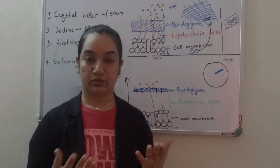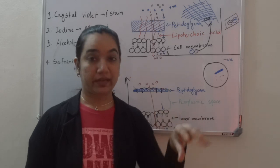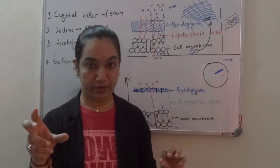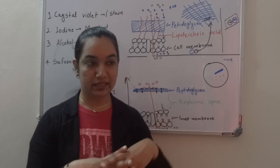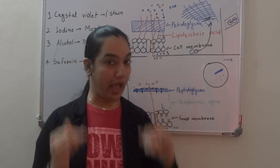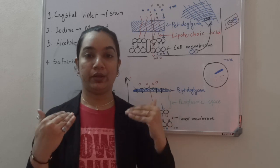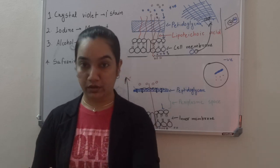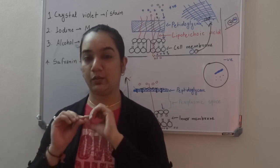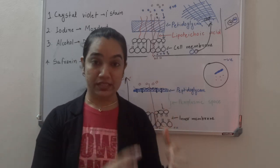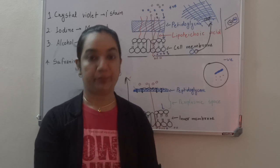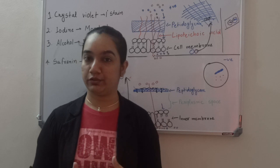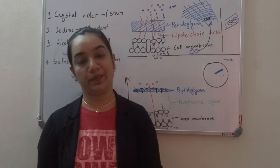In summary: gram positive has a cell membrane and a thick peptidoglycan layer, while gram negative has a cell membrane, a thin peptidoglycan layer, and an outer membrane rich in lipopolysaccharide. Both bacteria take up crystal violet; iodine fixes it as the CVI complex. Alcohol dissolves gram negative's outer membrane, and the thin peptidoglycan cannot hold the CVI complex, so it leaches out — while gram positive retains it. Safranin counterstain then colours gram negative pink, while gram positive remains purple. That is how Gram staining works.